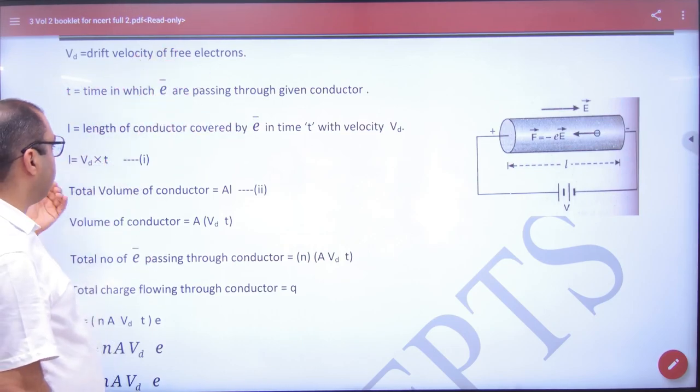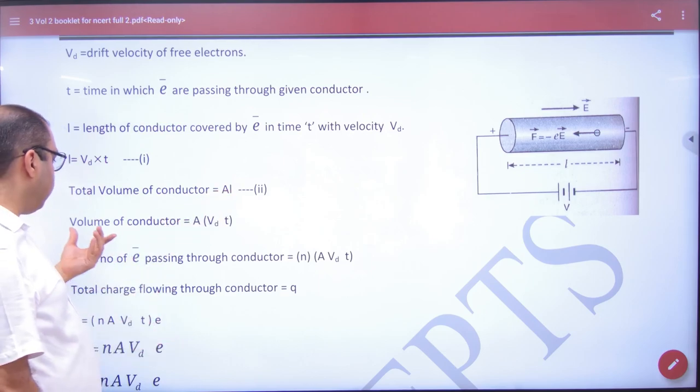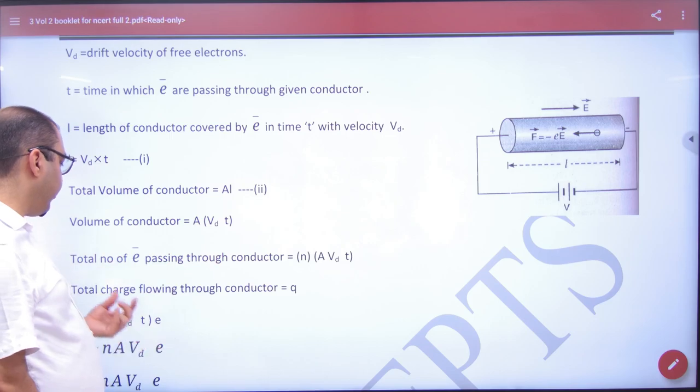Length of the conductor L is equal to Vd into t. Volume is area into length. Volume of conductor is A times Vd times t.